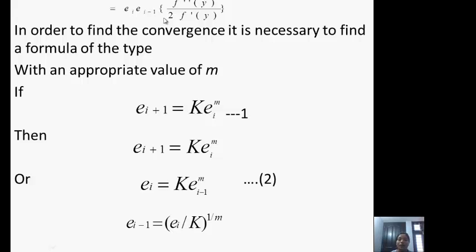So when we need to calculate the error in (i+1)-th iteration, it is necessary to find the formula of type e_{i+1} = K e_i^m. Here m is order of convergence which we need to calculate. m is our order of convergence of secant method.